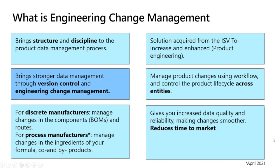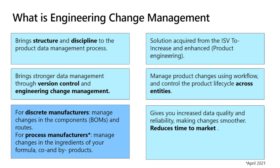What are these changes in a product? For discrete manufacturers, it's very useful to manage changes in components — what's in the bill of materials and in the routes. For process manufacturers, it's useful to track changes in ingredients of a formula, quantities, and co-products or by-products. The process manufacturing part is coming April 2021. You can also keep track of smaller changes such as quantity of components or attributes.